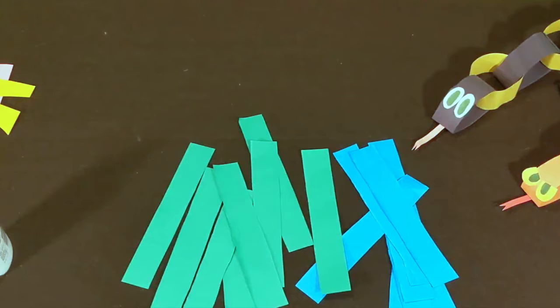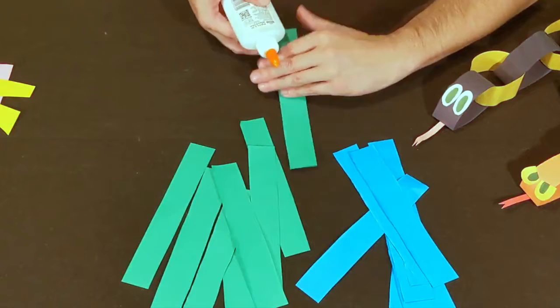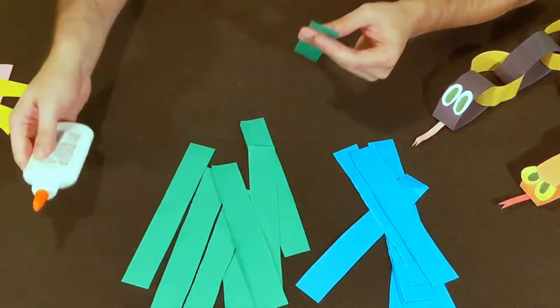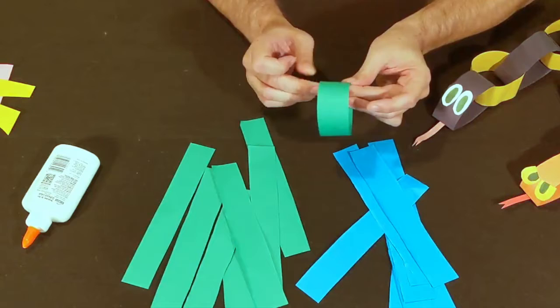Okay, we're going to start with our snake's head. We'll pick out which color we want to start with. I think I'm going to start with green. We're going to glue our first loop together of many. I'm just going to put a little bit of glue on there. I'm going to pull this around into a little circle like so. I'll push that together to let the glue dry just a little bit.